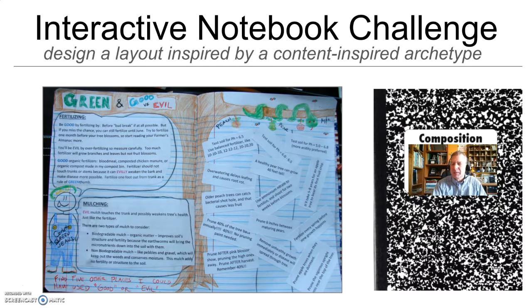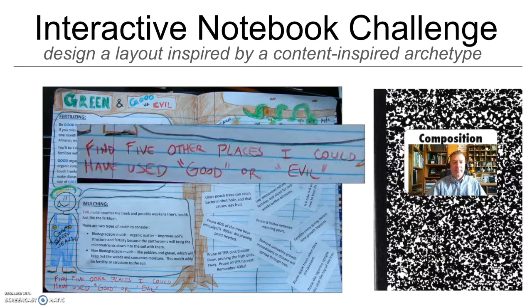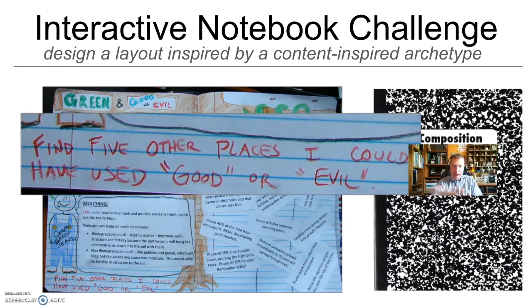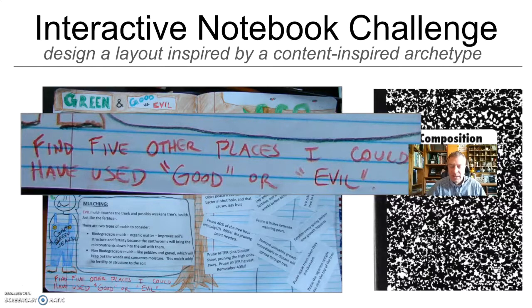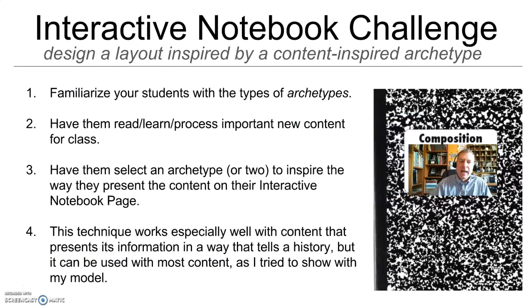Finally, the interactive element — I made it easy this time. I've seen some of my students' examples recently and they're making them pretty complicated. Here's an easy one: find five other places in my write-up where I could have used the word 'good' or 'evil.' That's the discussion — we look over the information together as I share my interactive page with you, and there's your task at the end. They don't have to be as complicated as some of the puzzles some of you are creating as your interactive elements.